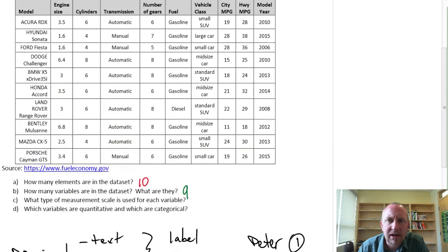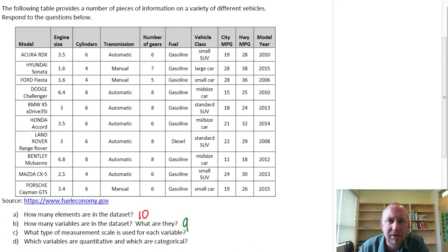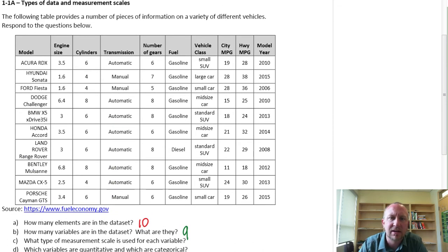So we can scroll back up here and apply this now to our data set that we're looking at. So for part C, what type of measurement scale is used for each variable?